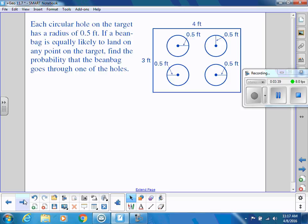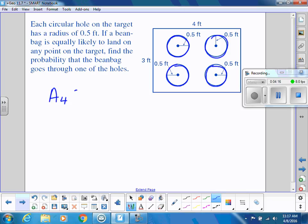So if we have a cornhole or beanbag toss board where there are holes—we have four holes in the board—we want to know what is the probability of landing on any point on the target, that it goes through the holes. So we want to find the area of all the holes. Those holes are in the shapes of circles, so we're going to add up those four circles. That's going to be our numerator, and we're going to divide by the area of the rectangle.